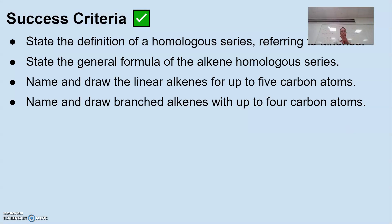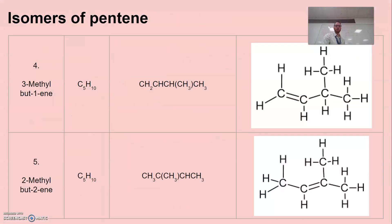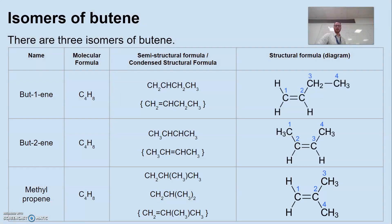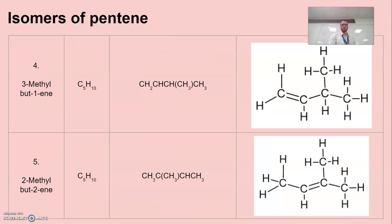That finishes it off. State the definition of homologous series referring to alkenes. Homo means same, same family, similar physical and chemical properties. Each member differs by a CH2. General formula, CnH2n. Name and draw linear alkenes up to five. Prefixes are the same. Eth is the first member. Ethene, propene, butene, pentene. Name and draw the branched alkenes with up to four carbons. Ethene and propene have one isomer only, and we've got our three isomers of butene: but-1-ene, but-2-ene and methylpropene. Prop is the backbone, so it's got a three carbon in a linear chain and then methyl group coming off that second carbon. And that's it.